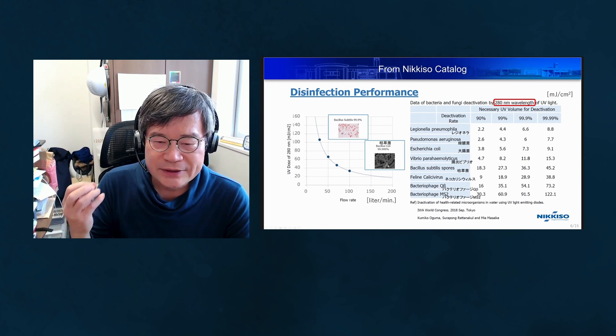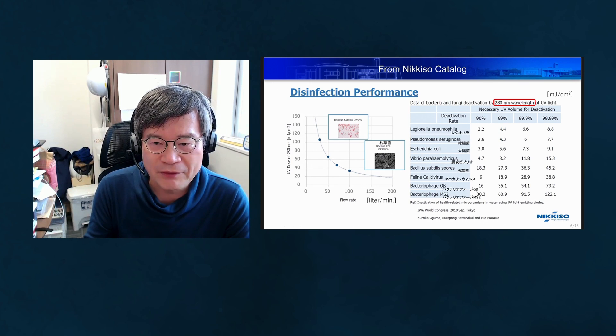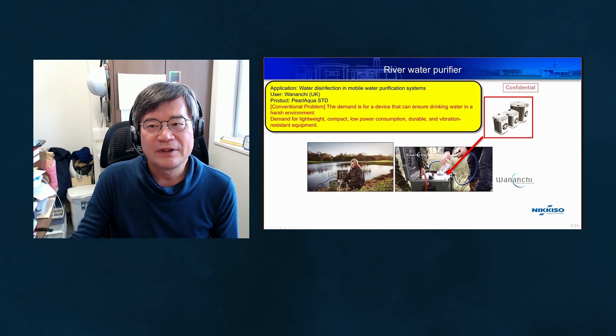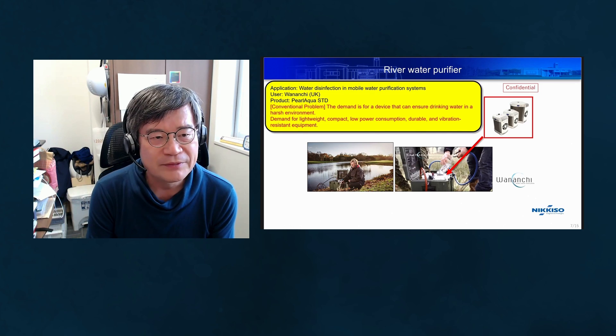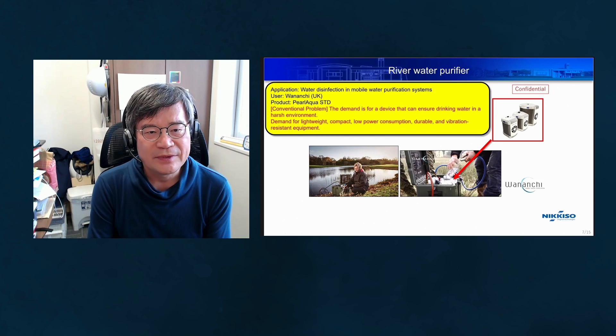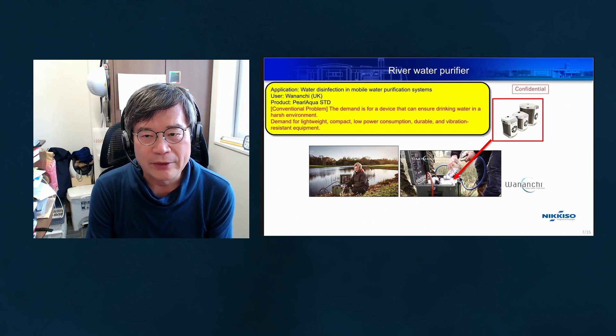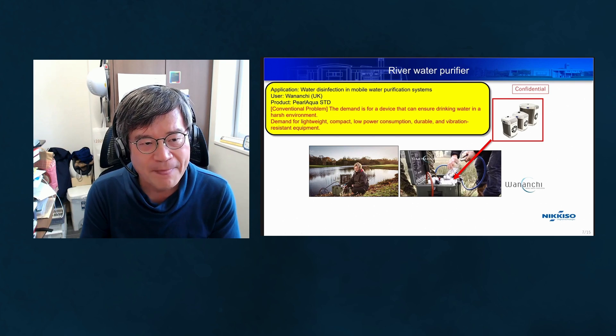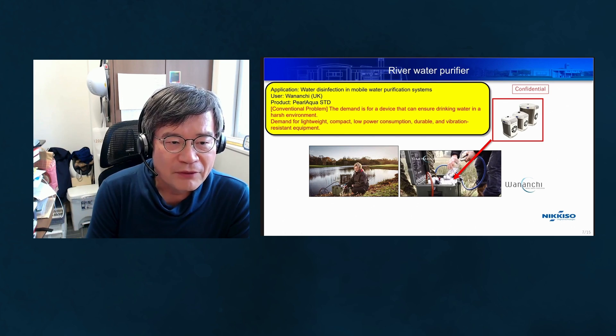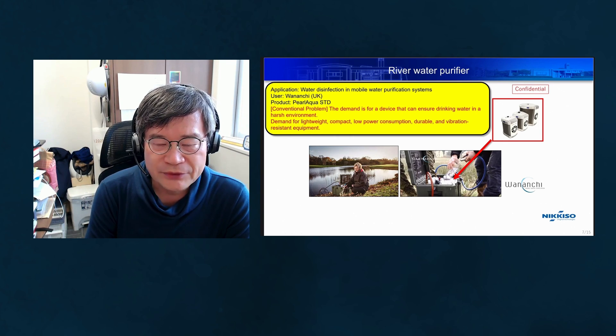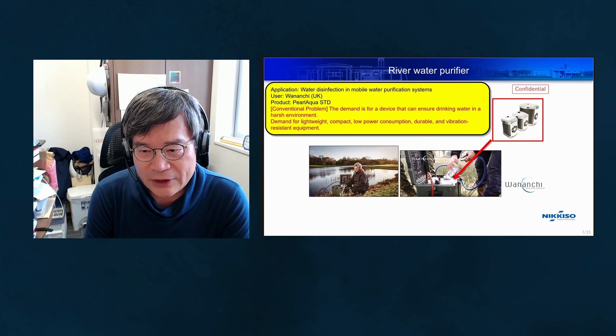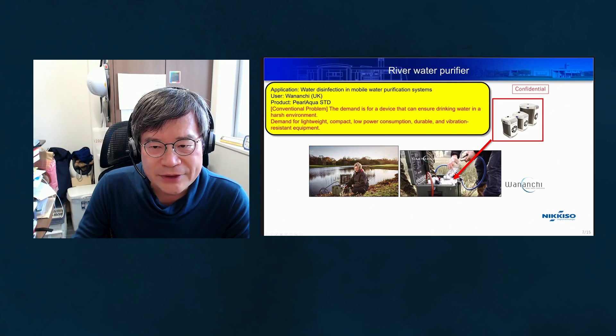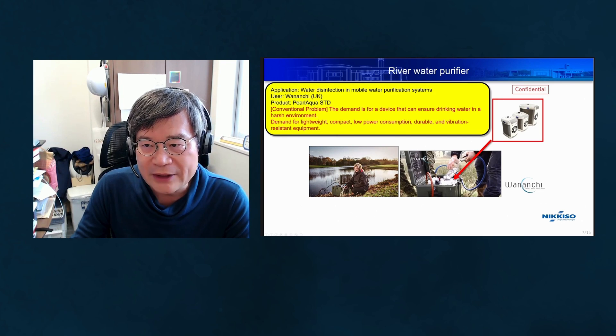For example, as a river water purifier. Conventional systems demand devices that can ensure drinking water in harsh environments like pools or rivers. There is big demand for lightweight, compact, low power consumption, durable, and vibration-resistant equipment. We can provide this through small, compact, durable deep UV LED purification systems that deliver safe and secure water.